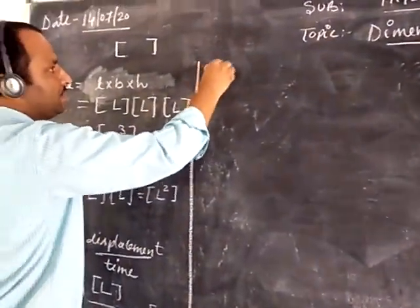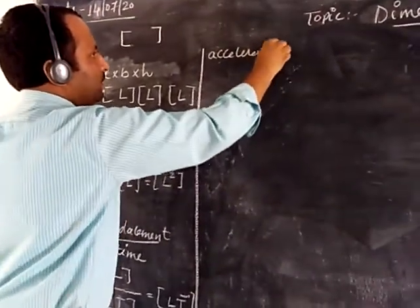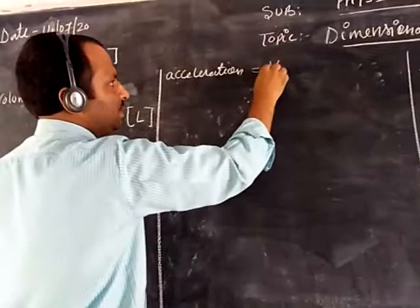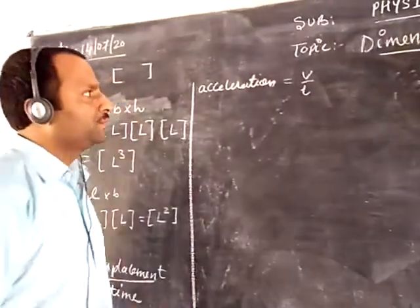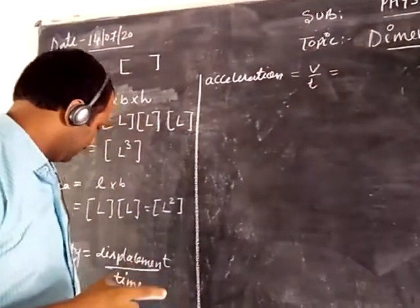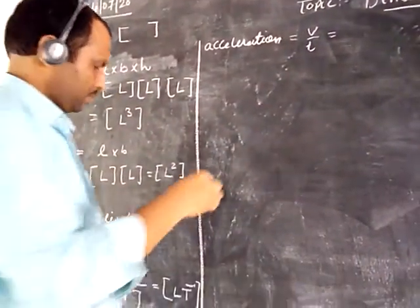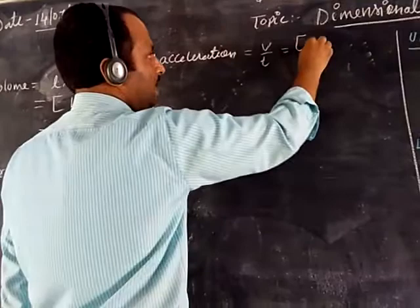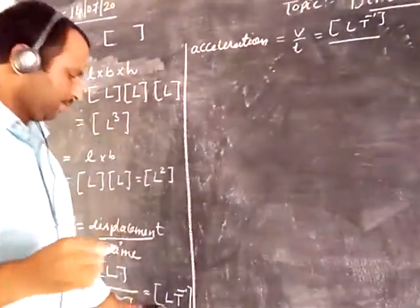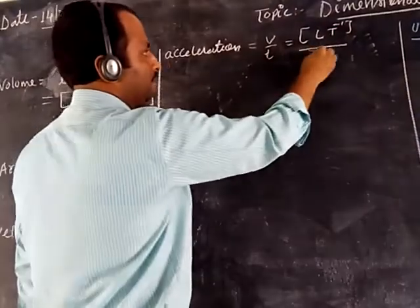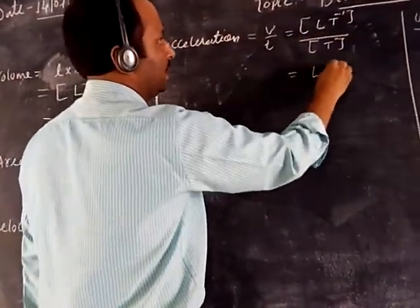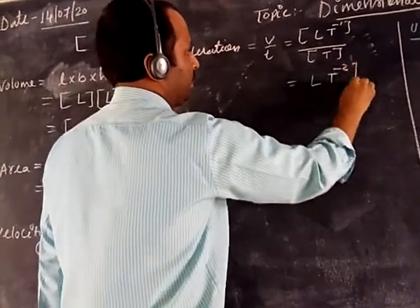Next, acceleration. Acceleration is change in velocity upon time. The dimension of velocity we found earlier is L T to the power minus 1. Dividing by time T, the dimension of acceleration is L T to the power minus 2.